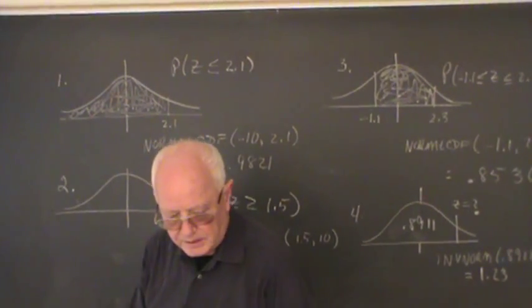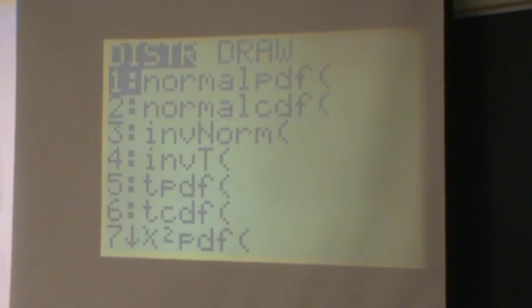So we go to the calculator, turn it on, and we go to second distribution, and this screen comes up. We want to always select, for finding probabilities, the normal CDF.